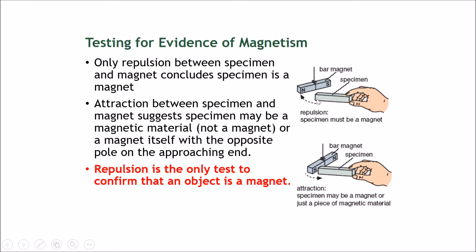A lot of you may ask: what about attraction? What if this side was a south side and I didn't know, and this one attracted itself to the south side — wouldn't attraction also be proof? The answer is no. Attraction does not prove that this thing is a magnet. When I brought this specimen close and this part of the bar magnet turned itself to attract to this site, it could be one of two things. The first is that this specimen could be a magnet with its north pole on the approaching end.